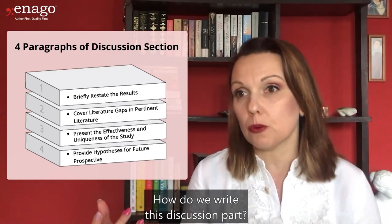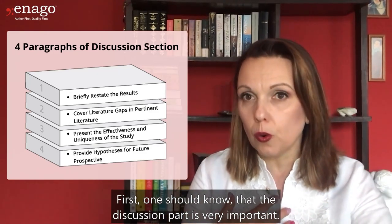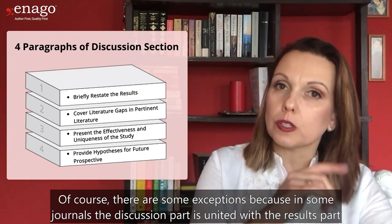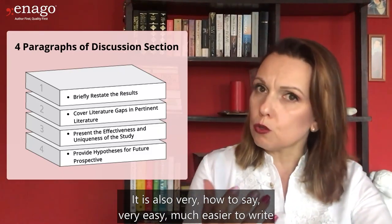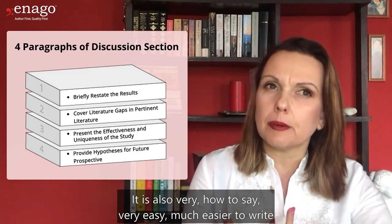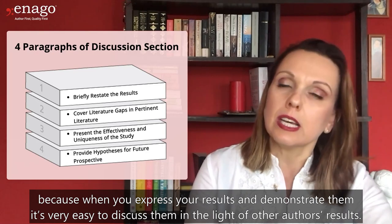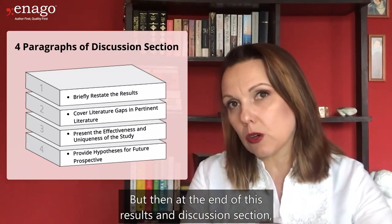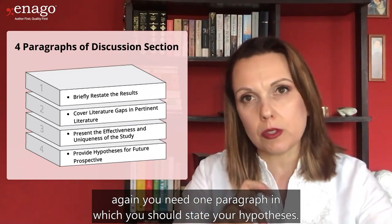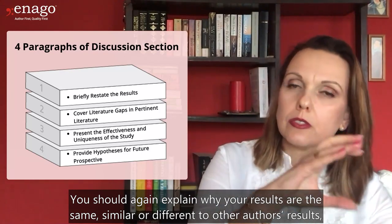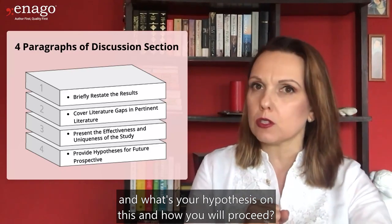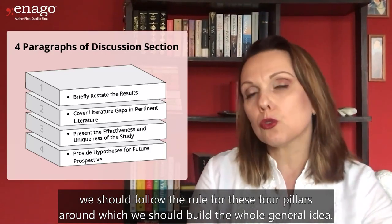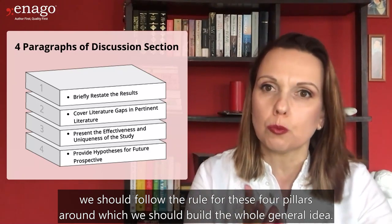How do we write this discussion part? The plan is very important. There are some exceptions — in some journals the discussion part is united with the results part as a combined results and discussion section. It is actually easier to write because when you express and demonstrate your results, it is easy to discuss them in the light of other authors' results. But at the end of that combined section, you still need one paragraph stating your hypothesis, explaining why your results are the same, similar, or different to other authors' results, and how you will proceed. If writing a standalone discussion, follow the rule of these four pillars.